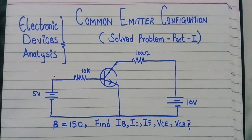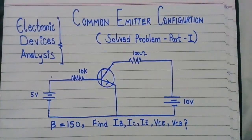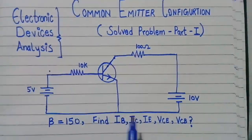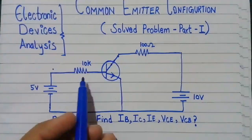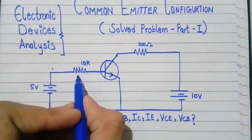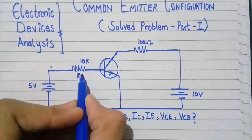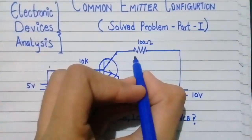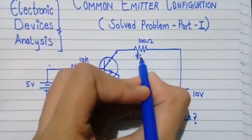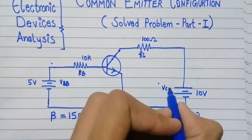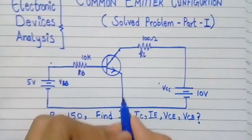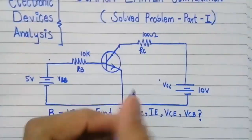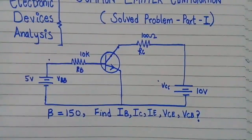Let's start with the solution of example number one. This is the common emitter configuration circuit and there are two resistances present: the base resistance Rb, the base voltage Vbb, and the collector resistance Rc. This is the collector voltage Vcc, and the branch between the input loop and output loop is grounded — this is the emitter branch — so it is called the common emitter configuration.